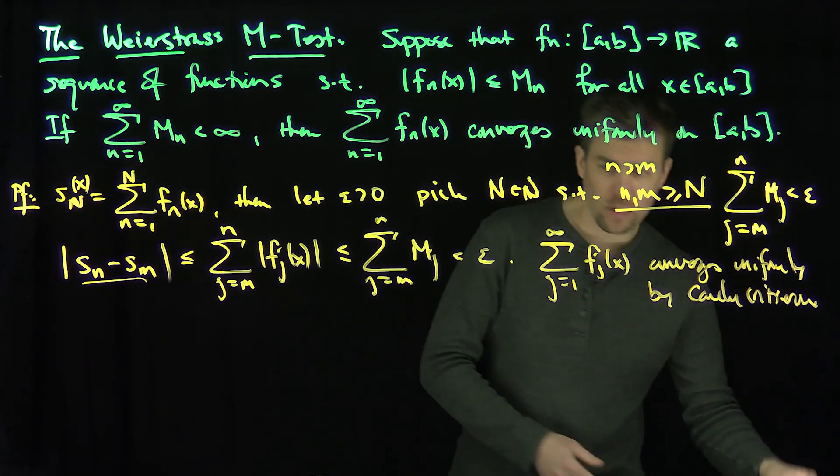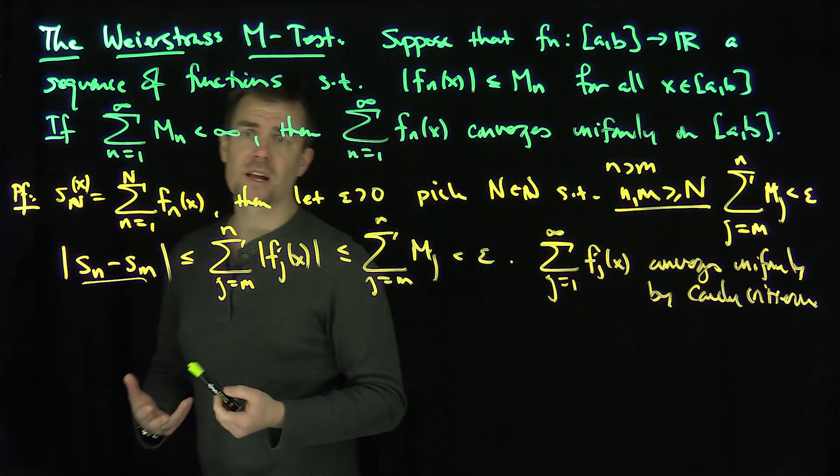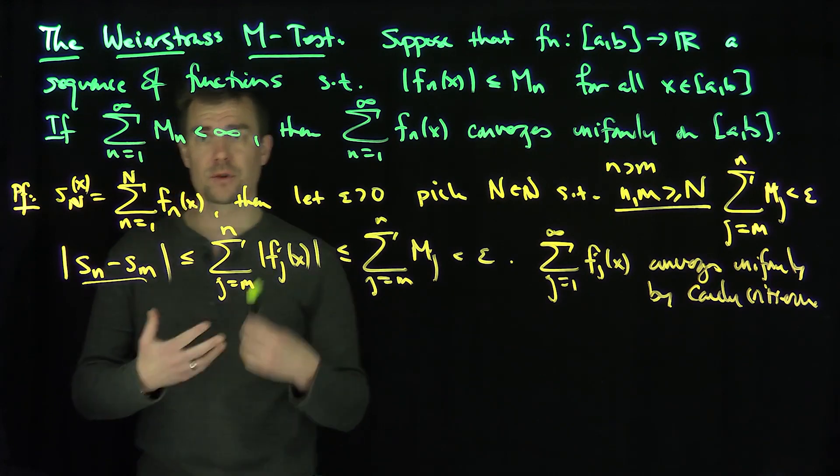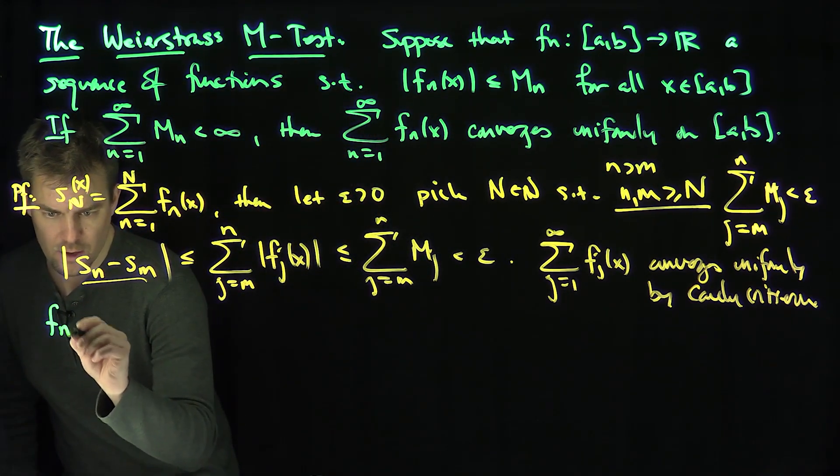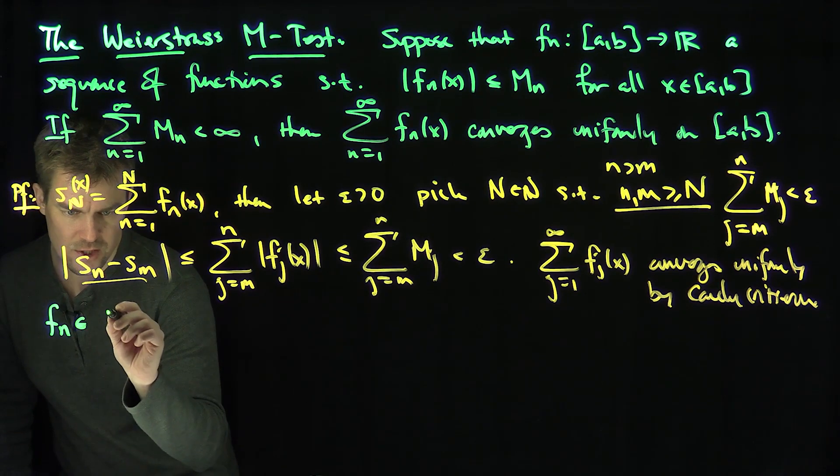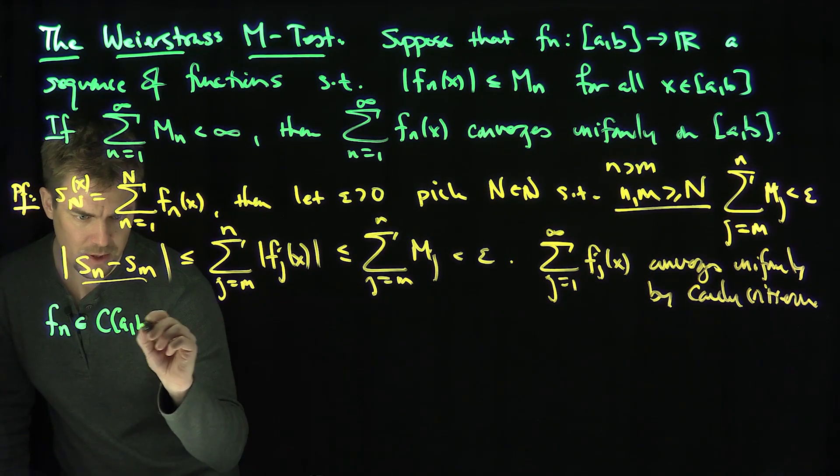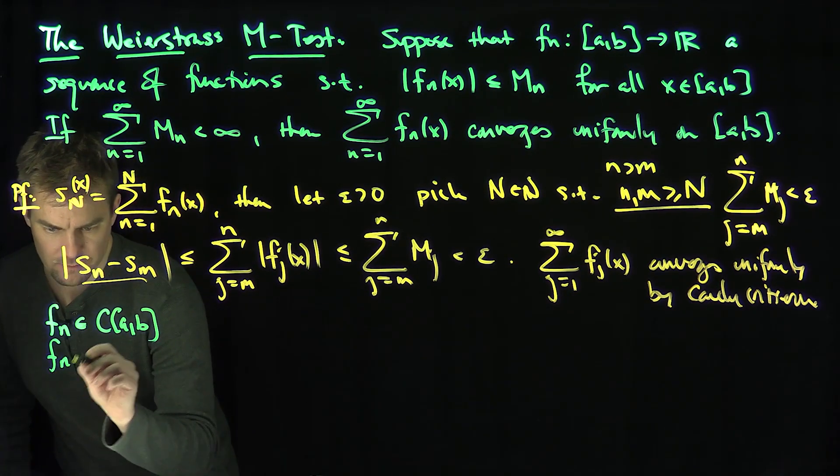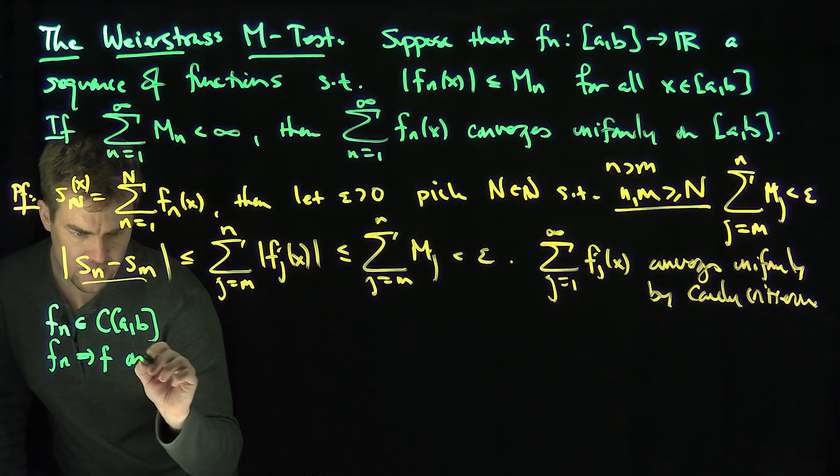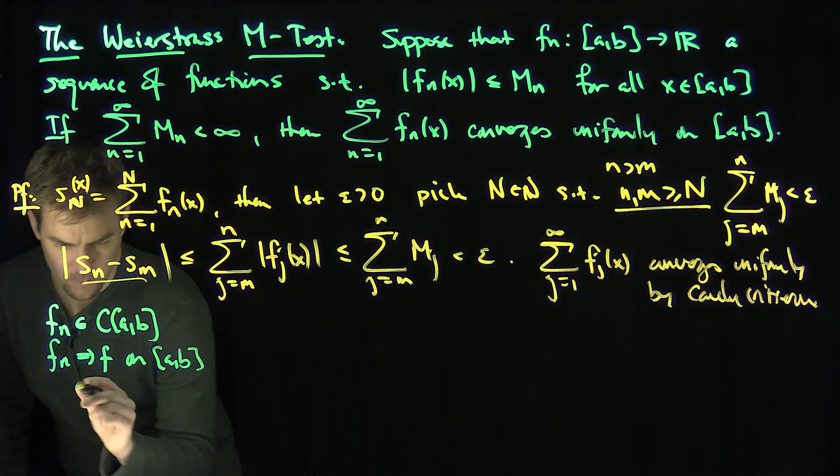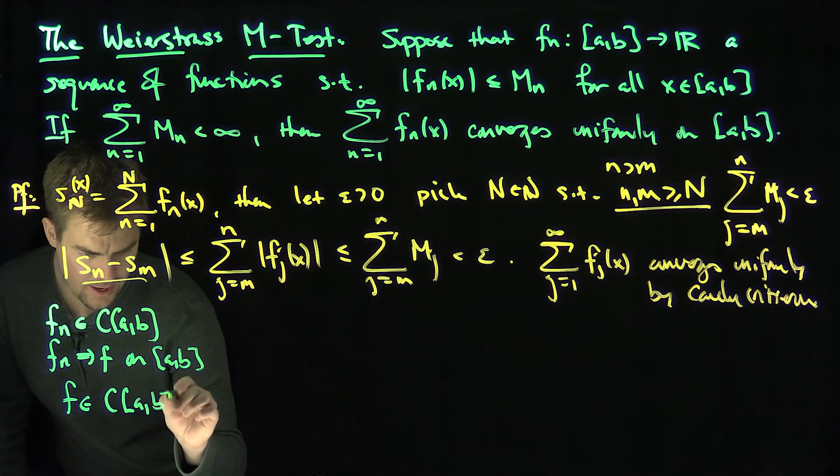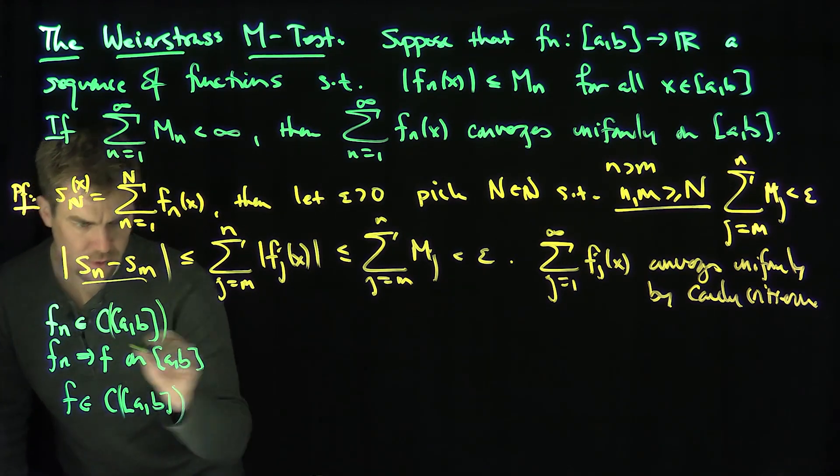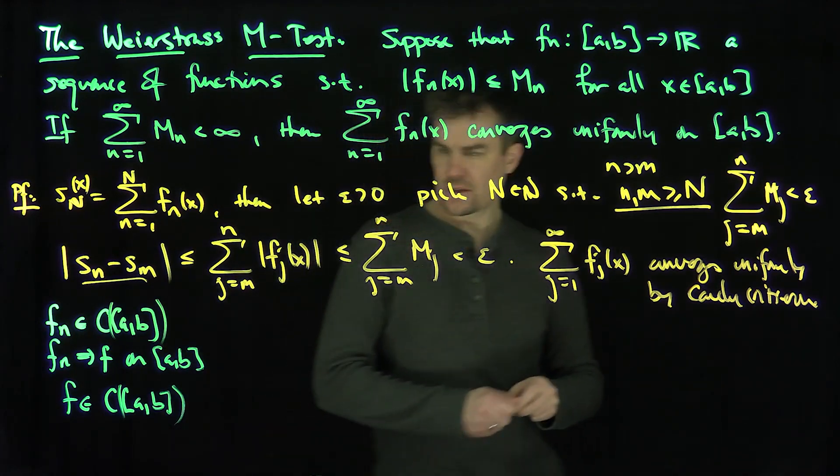Now, this is a very powerful tool, because we know the fact that if I have a sequence of continuous functions that converge uniformly, the limit has to be continuous. In other words, if f_n are continuous functions on (a,b), and f_n converges uniformly on (a,b), then f itself is a continuous function on (a,b). So the uniform limit of continuous functions is a continuous function.